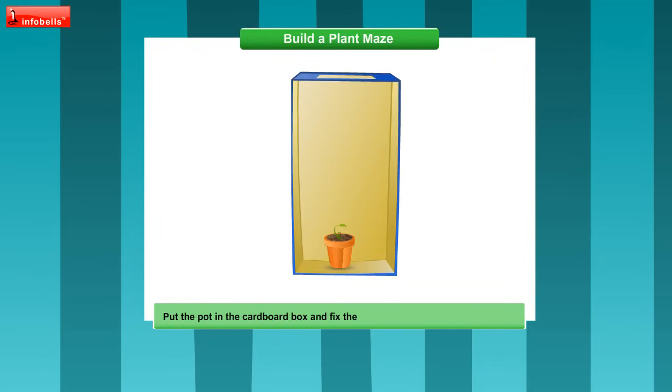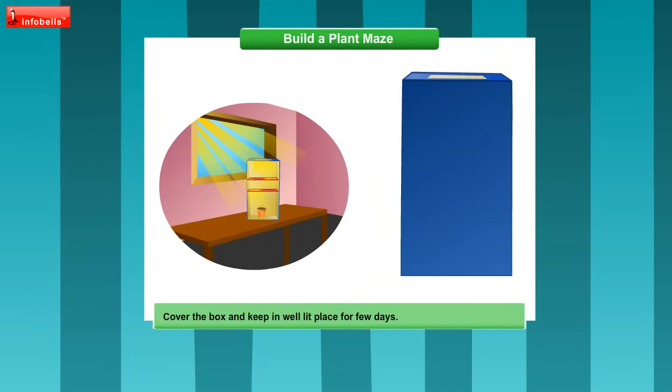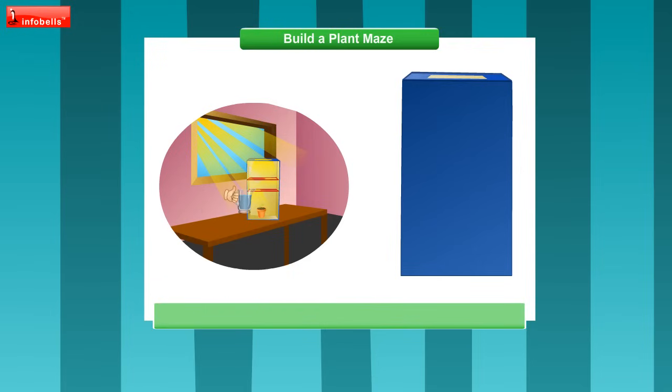Put the pot in the cardboard box and fix the cardboard piece slightly above it. Cover the box and keep in a well lit place for a few days. Water the plant every day.